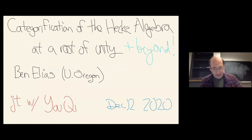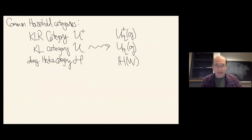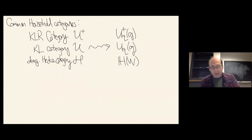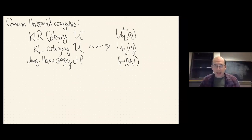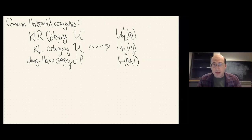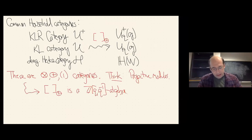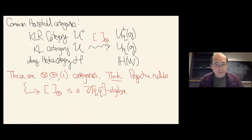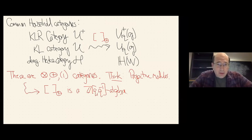So let me begin. We've talked about a lot of these categories at this workshop. Here are some kinds of categories you might be interested in: the Khovanov-Lauda category, which categorifies the positive half of a quantum group, or the KLR category, or the whole Khovanov-Lauda category with cups and caps that categorifies the whole quantum group. Maybe the diagrammatic Hecke category categorifying the Hecke algebra. Regardless, I'm thinking about some kind of additive monoidal graded category — like projective modules — and if you take their split Grothendieck group, you get an algebra because of the monoidal structure, and it's a Z[q, q⁻¹] algebra because of the grading.